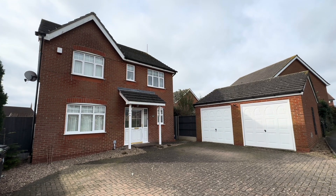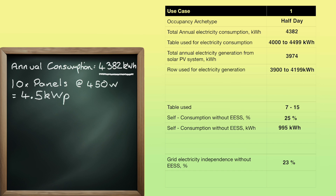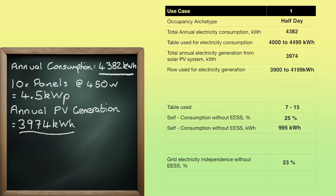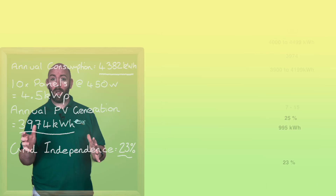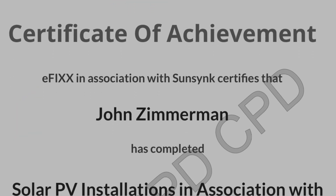Let's recap our installation. Our property, with homeowners in half the day, consumes 4,382 kilowatt hours per annum. We can fit 10 panels onto the roof giving us a peak generation of 4.5 kilowatt peak. The total annual generation expected from our solar array — 10 degrees off south with a 30-degree pitch — is 3,974 kilowatt hours with a grid independence of 23%. If you want to learn more about solar arrays and battery storage, click the link in the description below to watch our free training package for your CPD and receive a certificate. Until then, bye-bye for now.